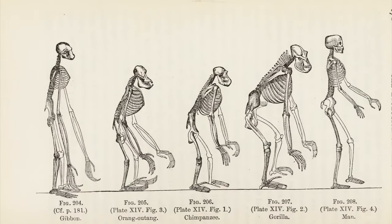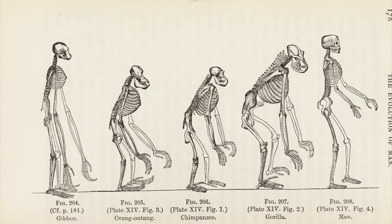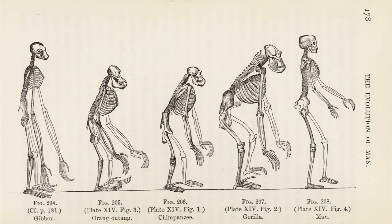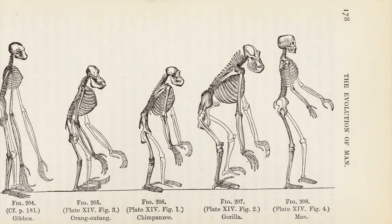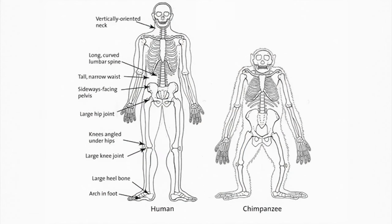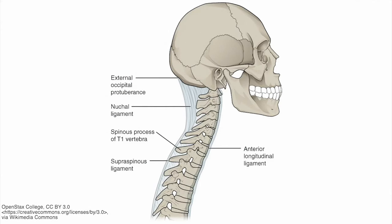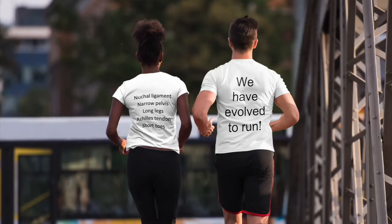When it comes to our anatomy, in order to proceed from arboreal ape to upright human we have evolved some pretty profound changes. For instance, our necks became longer and straighter and they now join the skull centrally rather than towards the rear as in other apes. At the back of our heads is another distinguishing feature, the nuchal ligament. This ligament holds the head steady when running, and running is the one thing we do really quite well compared with our primate cousins.